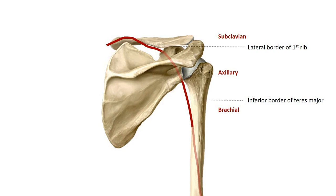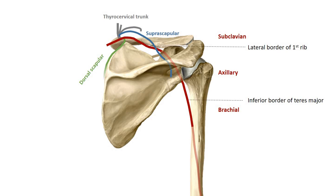This continuous artery has several branches which will anastomose with each other. Originating from the subclavian, we have the thyrocervical trunk. This gives several branches, one of which is the suprascapular artery. This artery will run just superior to the superior transverse scapular ligament, into the supraspinous fossa, then under the acromion process and into the infraspinous fossa.